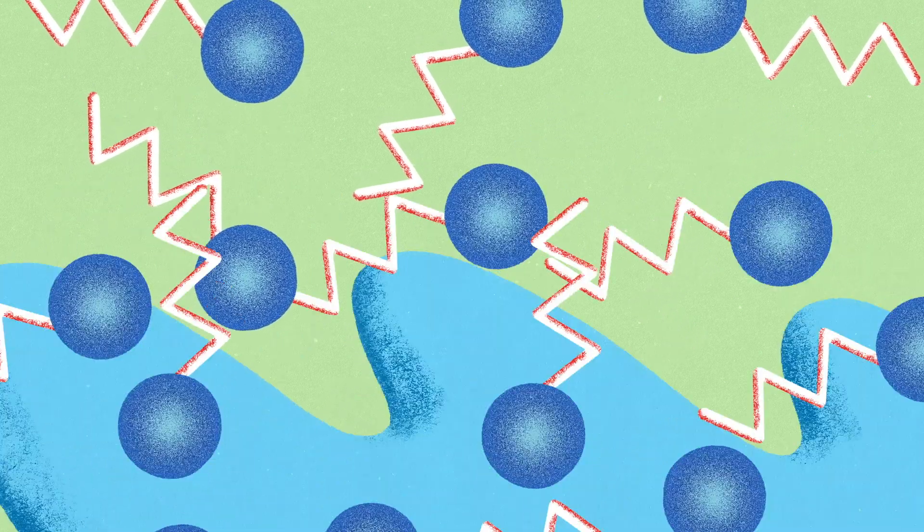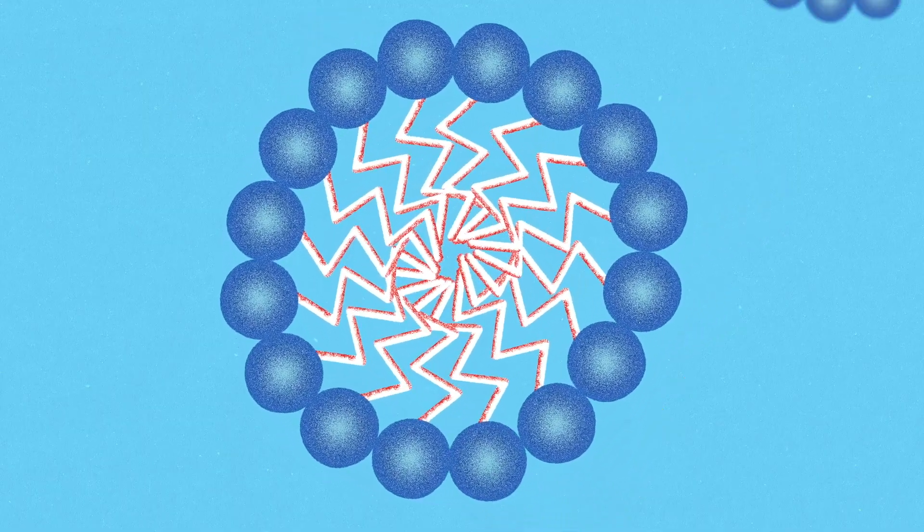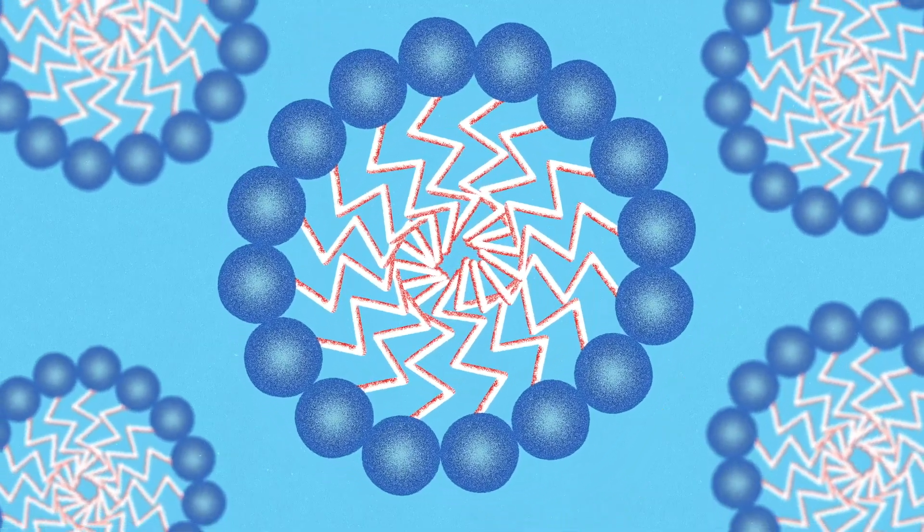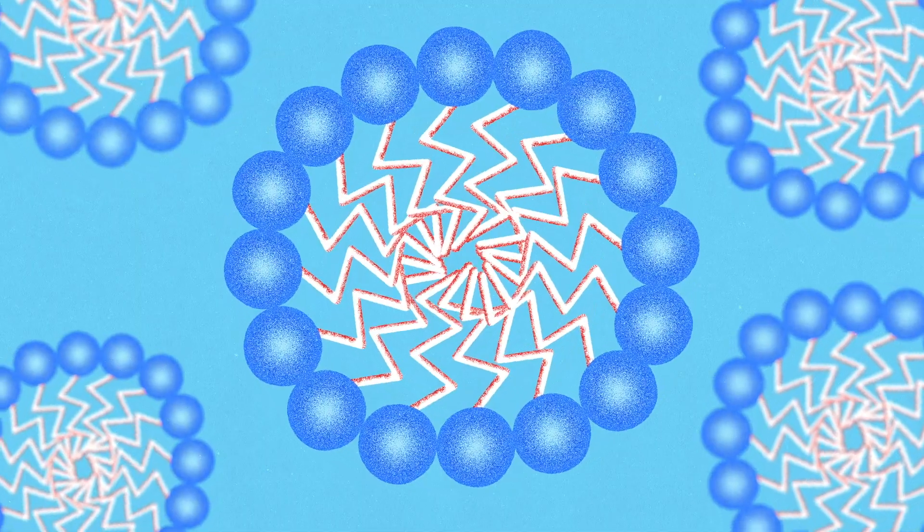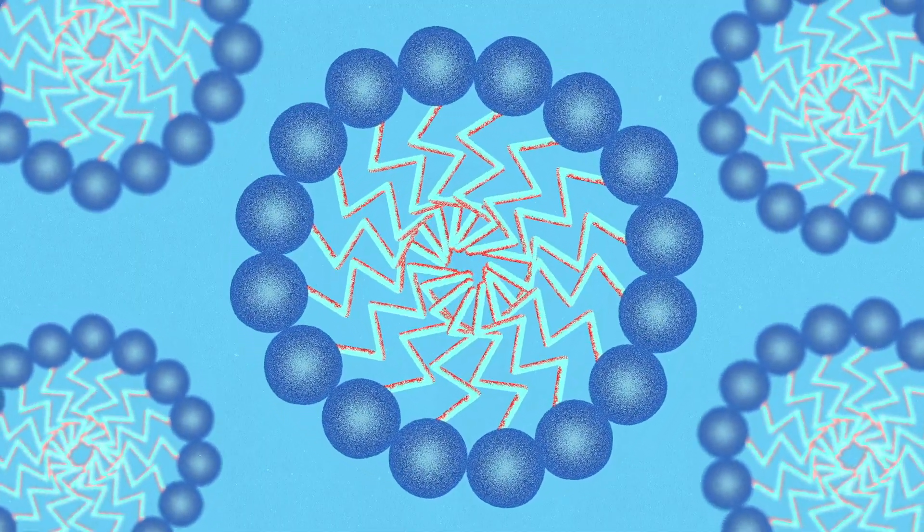When soap molecules are dissolved in water, they arrange themselves into micelles, spherical clusters of soap molecules, with the water attracting heads on the outside and water-repelling tails on the inside.